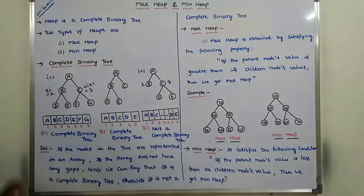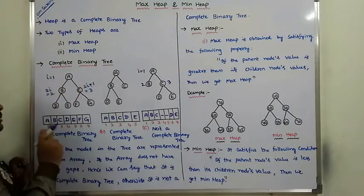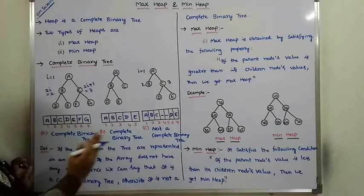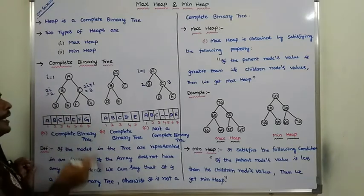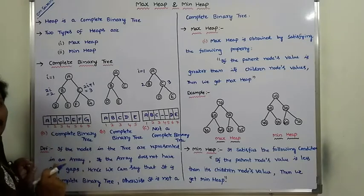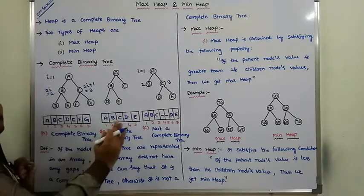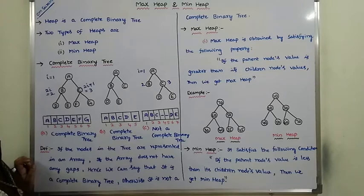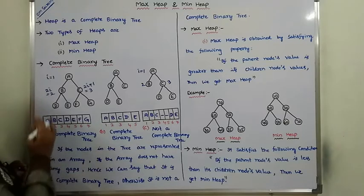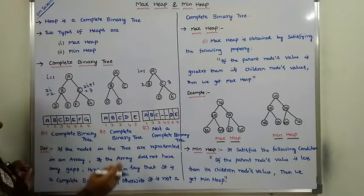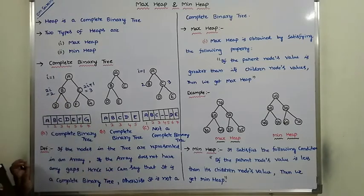So this is another definition: if the given binary tree can be represented in array or sequential representation and any gaps are there, hence we can say that binary tree is not a complete binary tree. If there are no gaps, hence we can say that it is a complete binary tree.